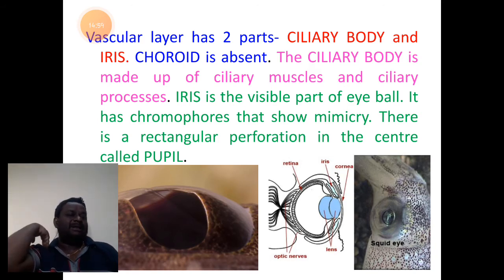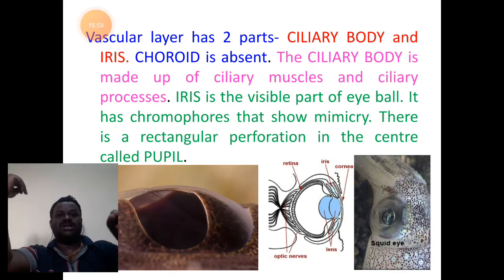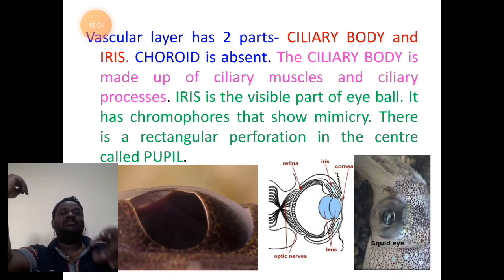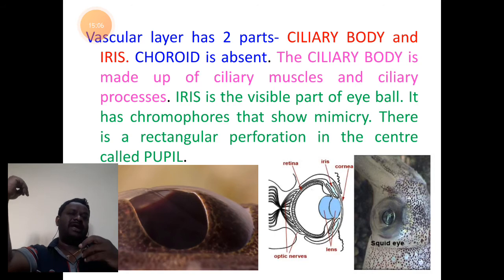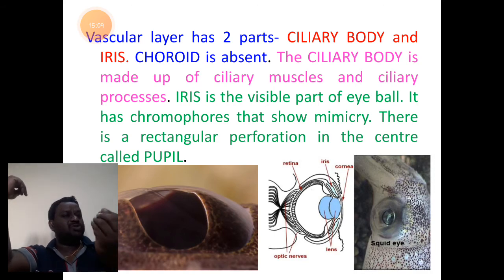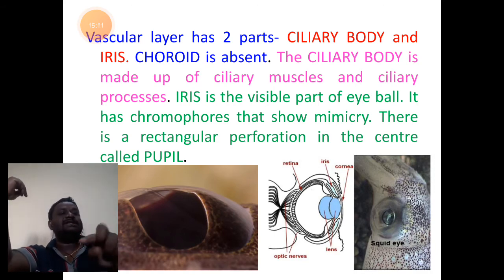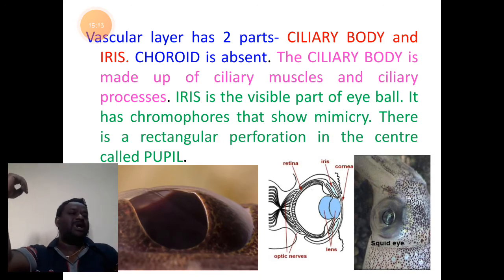Choroid is a thick layer of vascular tissue that supplies nutrients to the rest of the parts of the eye. It is totally absent and is taken care of by the ciliary body structure itself.